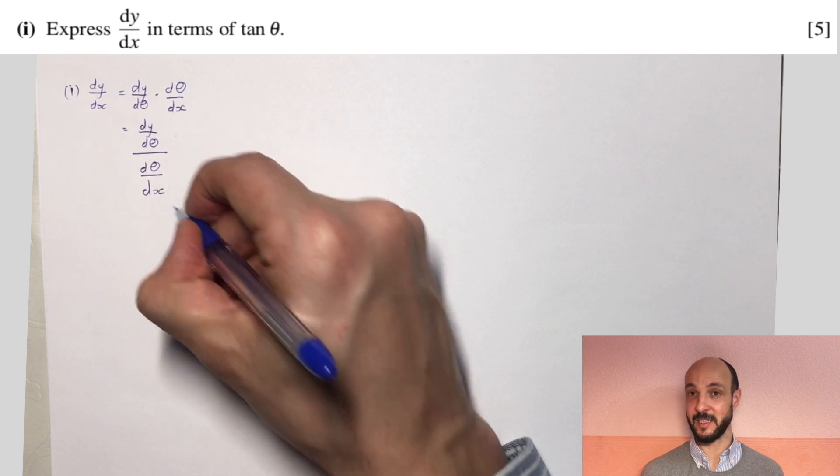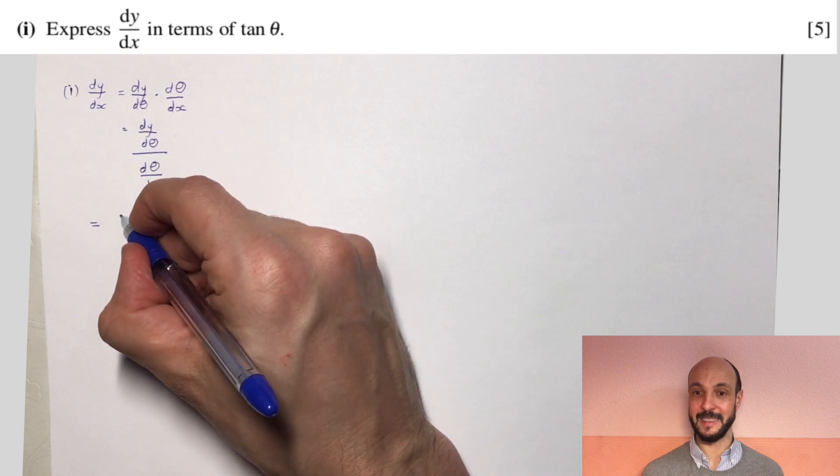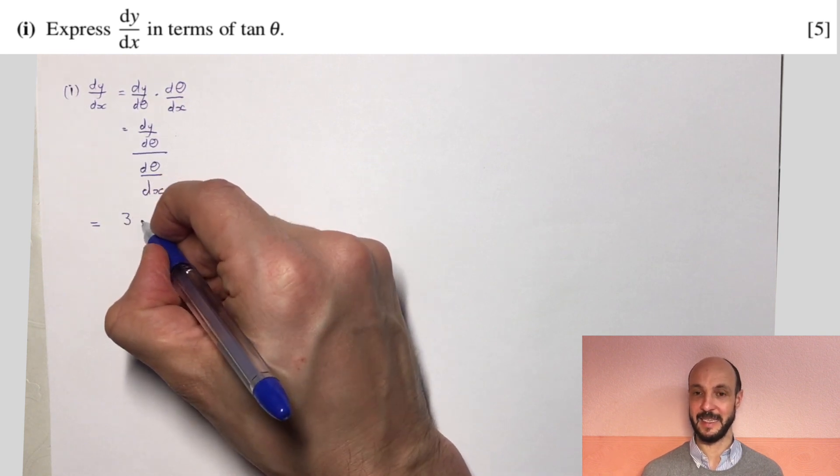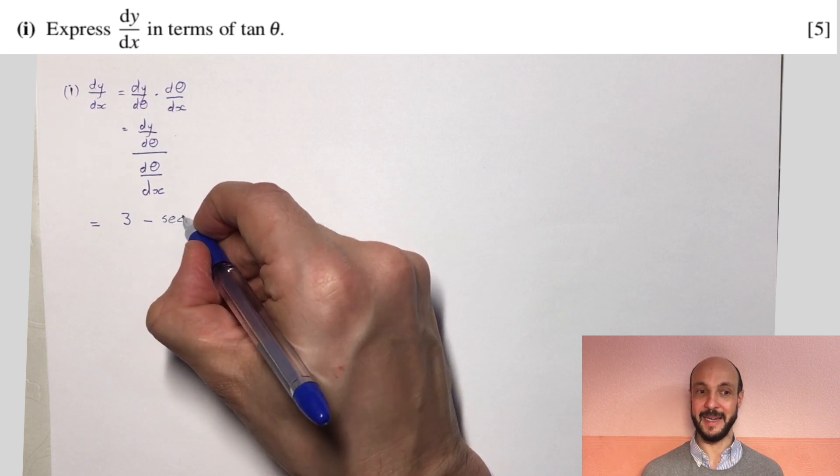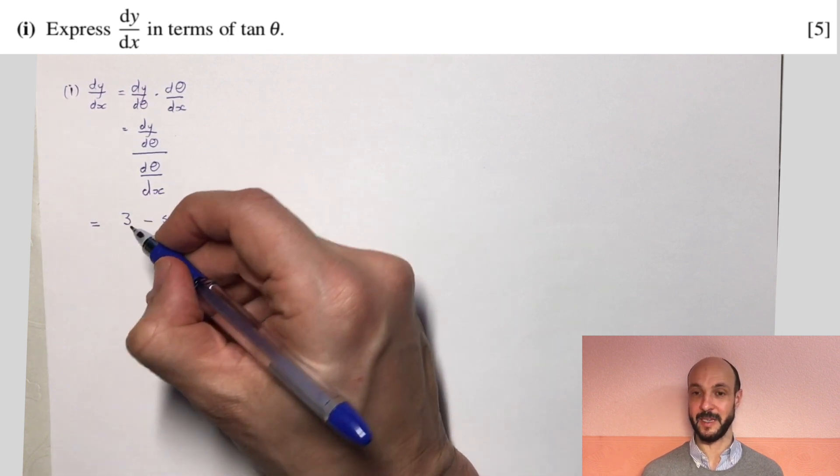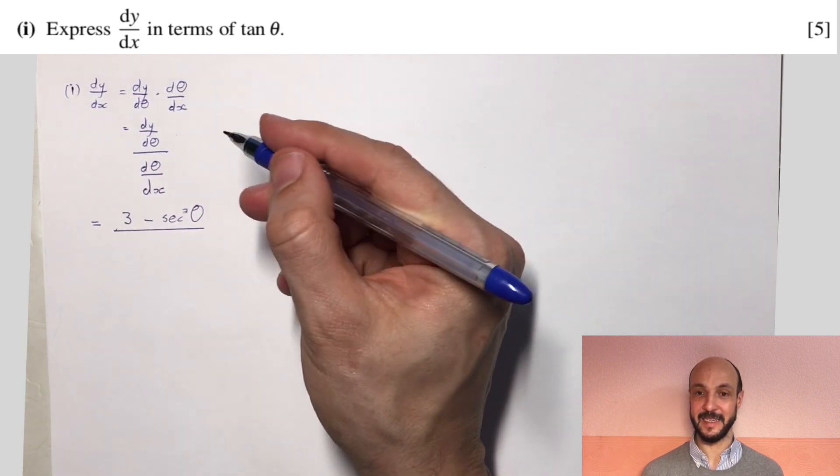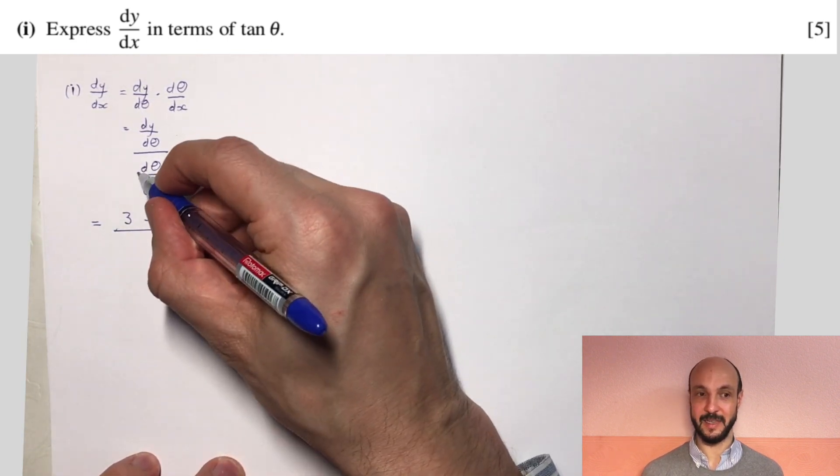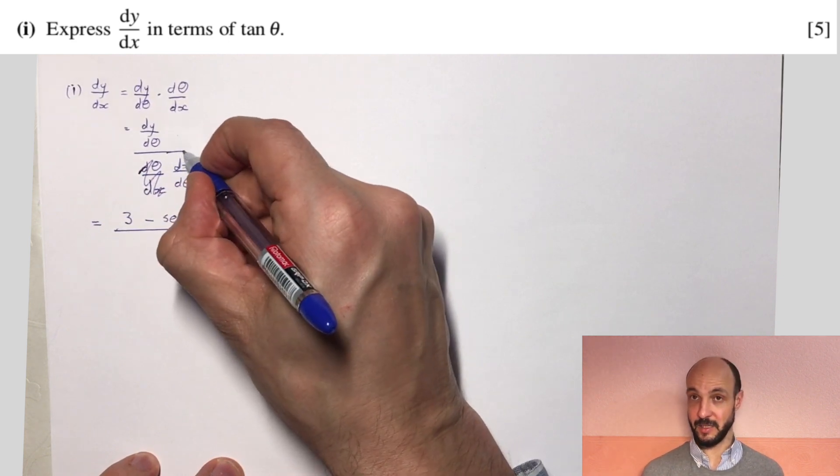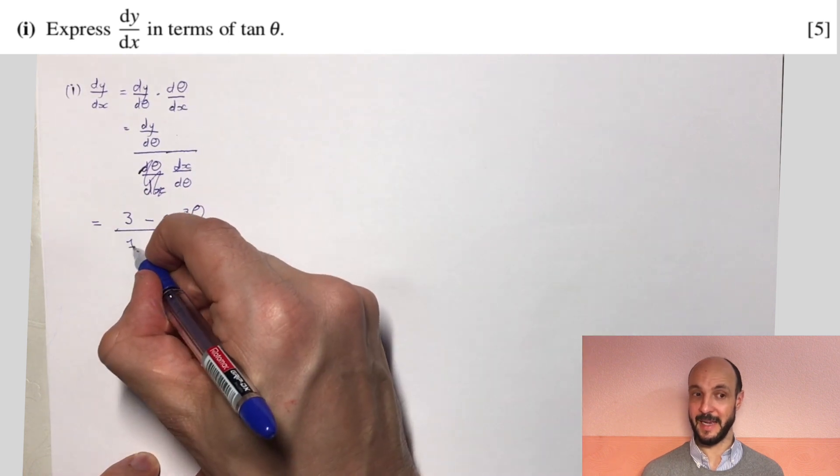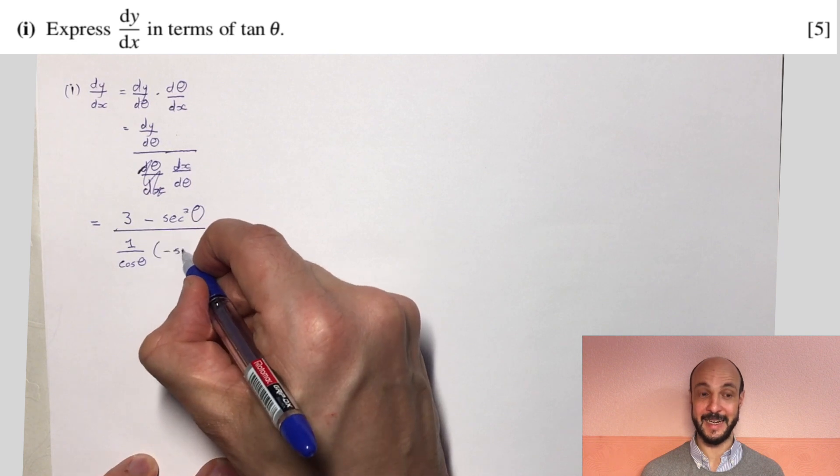So then we just need to differentiate our two parametric parts. So if we do dy/dθ, y is 3θ minus tan θ, dy/dθ is going to be 3 minus sec² θ, or 1 over cosine squared theta. And dx/dθ, x is log of cosine θ, dx/dθ is going to be 1 over cosine θ, and using the chain rule, times by minus sine θ.